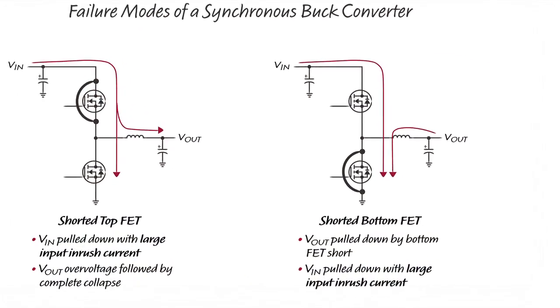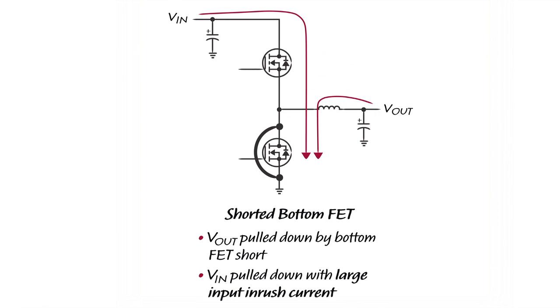If the bottom FET fails short, then the input voltage will be pulled down by large inrush current flowing into the bottom FET short when the top FET turns on every switching cycle. Meanwhile, the output voltage will be discharged by the current flowing from the output voltage to the fault.